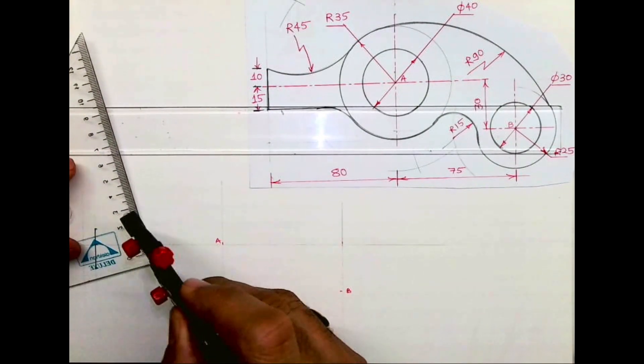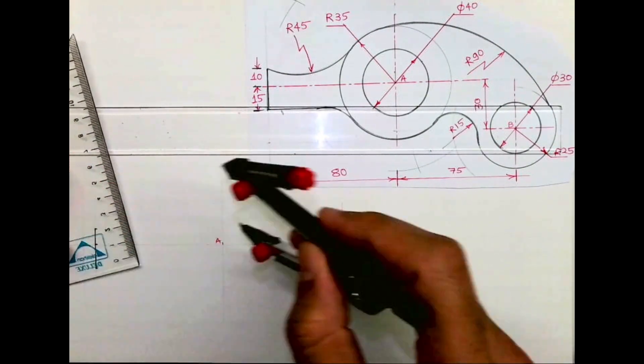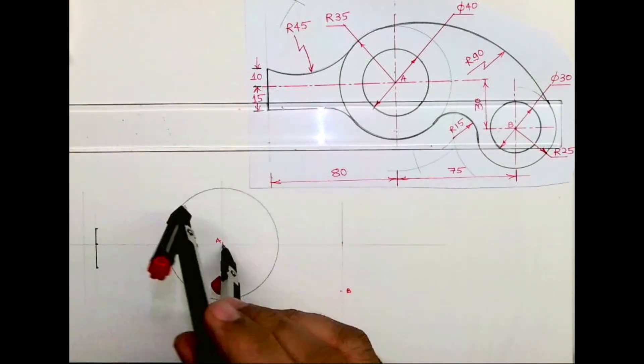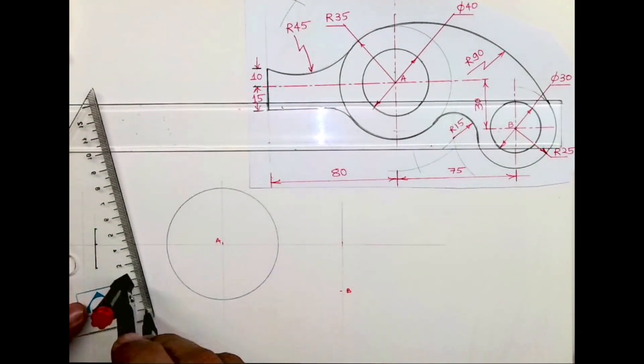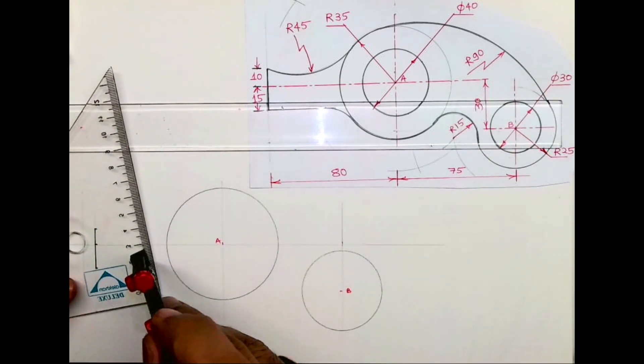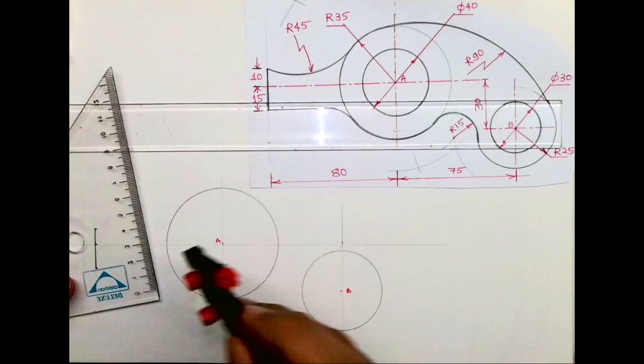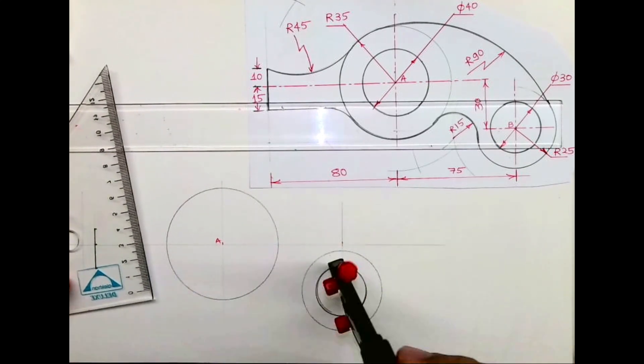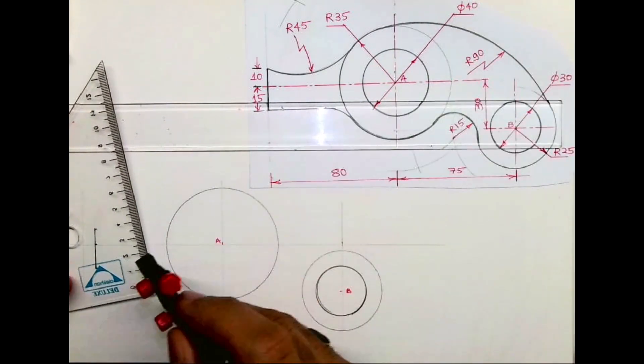Now you need to draw the radii. I am taking radius 35, then radius 25, then diameter 30 which is radius 15, and now radius 20.